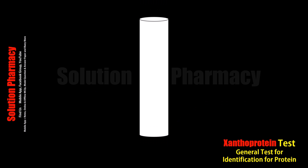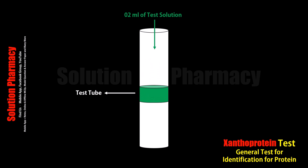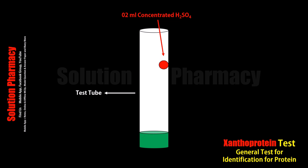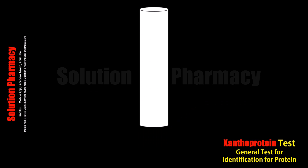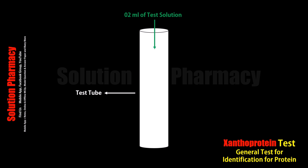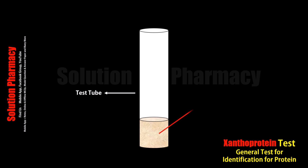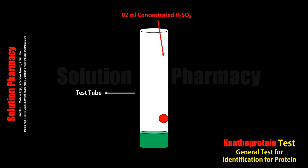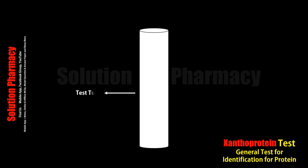First of all, let's know why the xanthoprotic test is performed. The xanthoprotic test is the general identification test for proteins which contain aromatic amino acids. If we have to identify whether aromatic amino acid is present in a protein sample or not, we can do it by performing this test. Examples of aromatic amino acids are tyrosine, phenylalanine, and tryptophan — all of which give a positive xanthoprotic test.